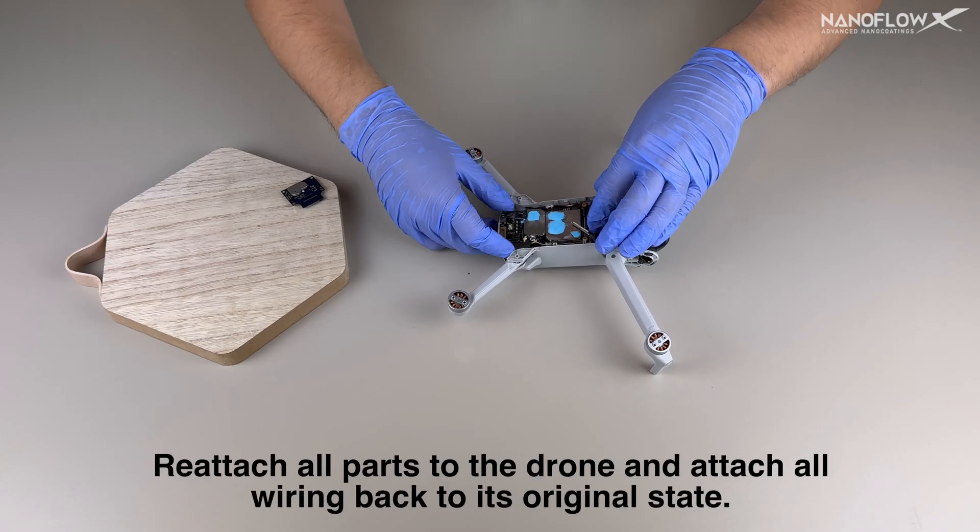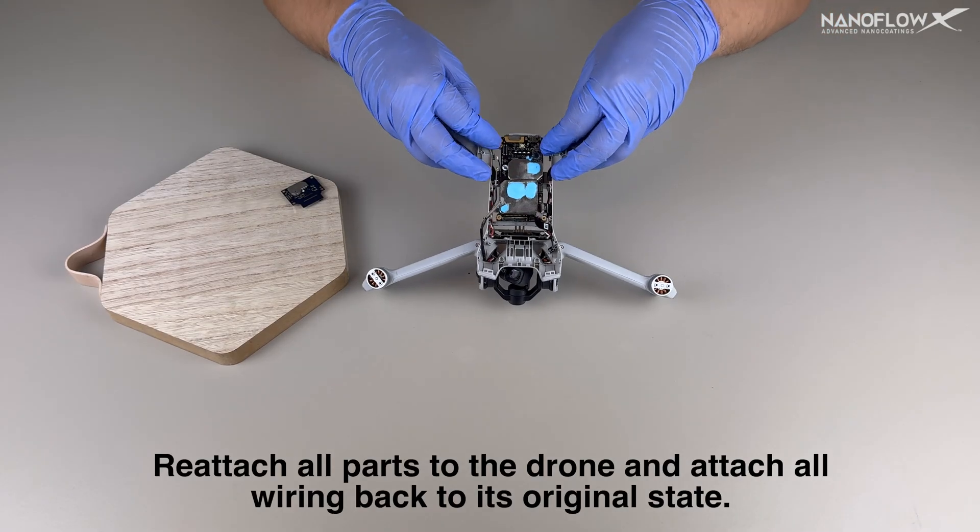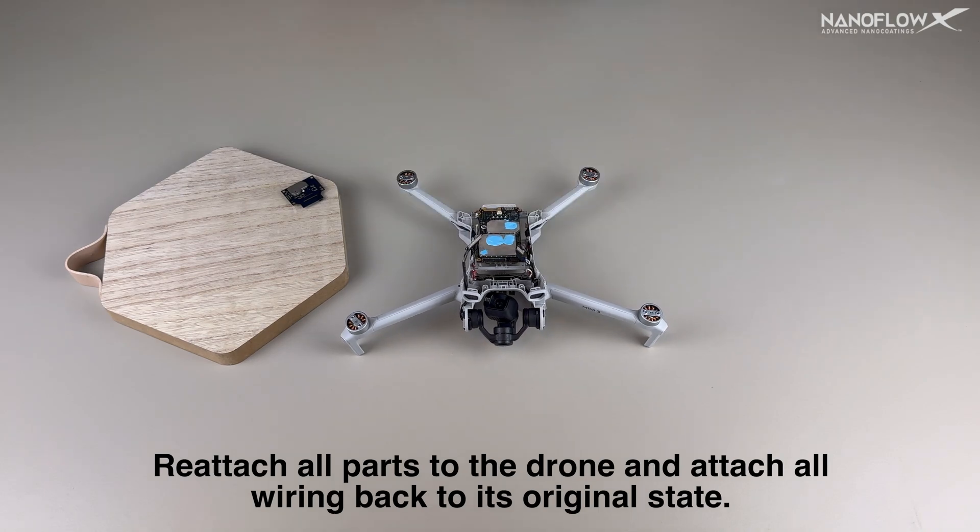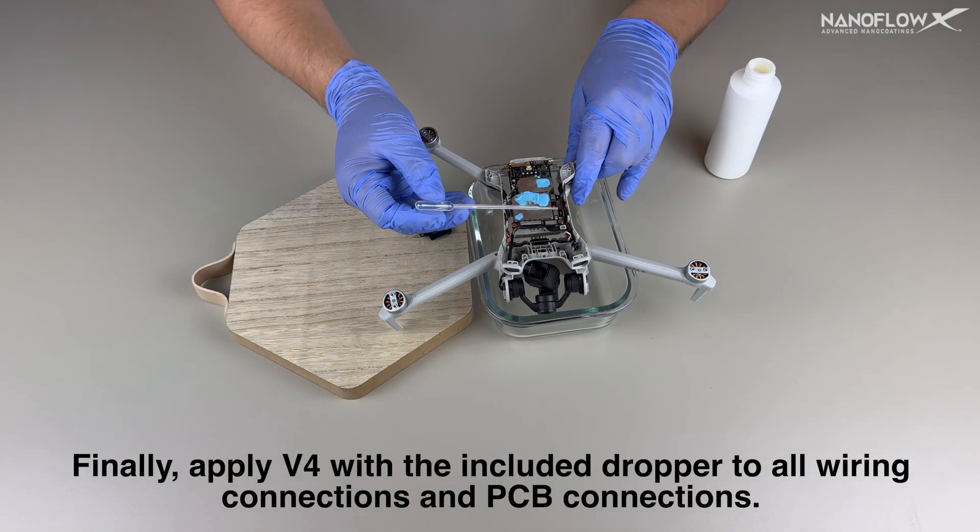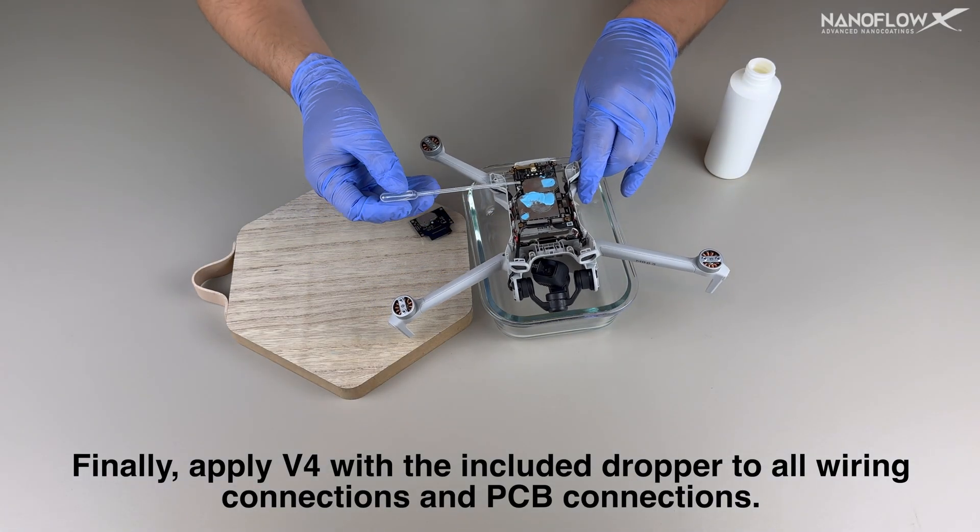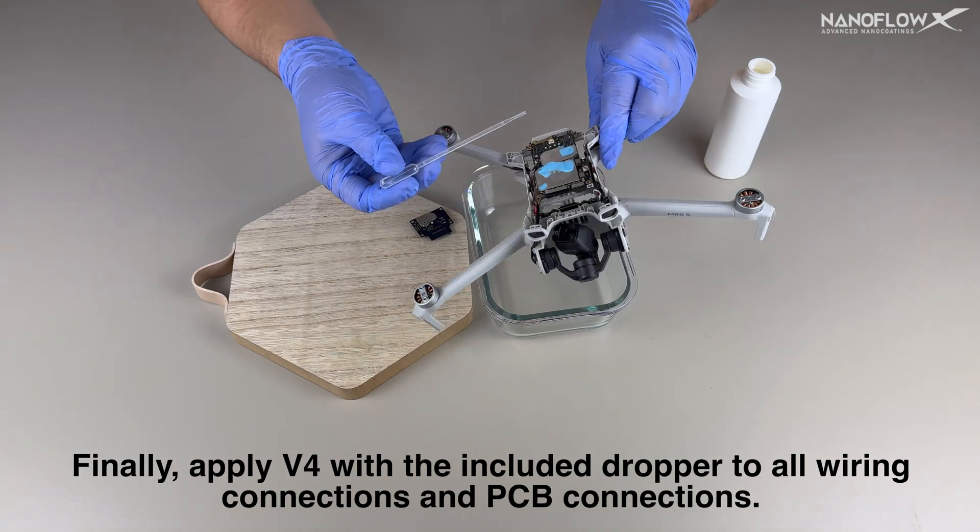After all the PCB boards are dried, reattach all parts to the drone and attach all wiring back to its original state. Finally, apply V4 with the included dropper to all wiring connections and PCB connections.